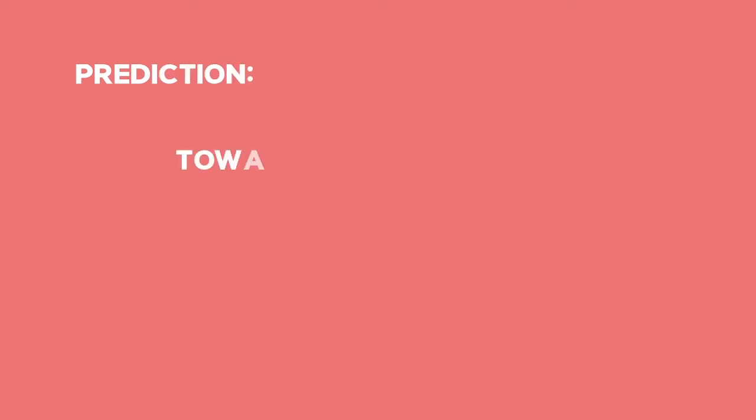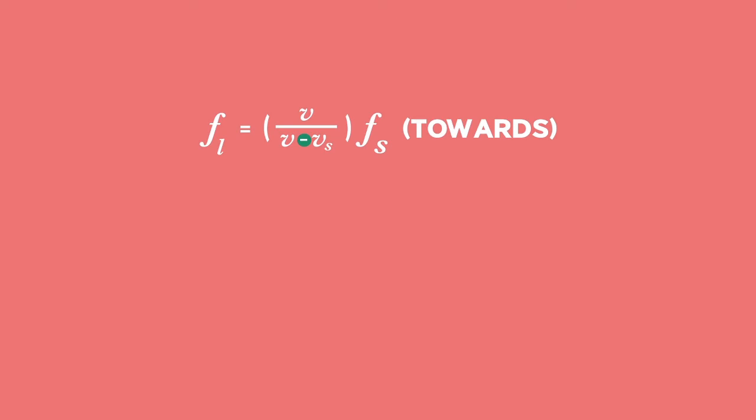Remember to make predictions and select the correct equation and sign to match what is available. For the approaching source, the minus sign must be used for the source velocity. For the source that is leaving or moving away, we use the plus sign for the V source.